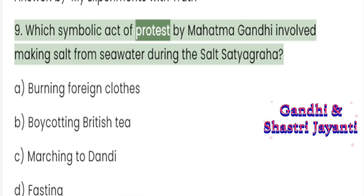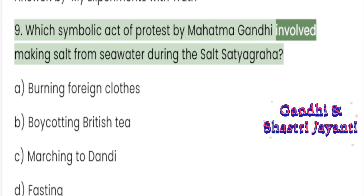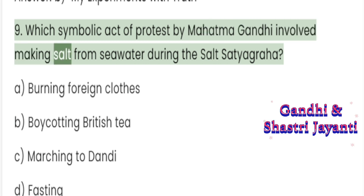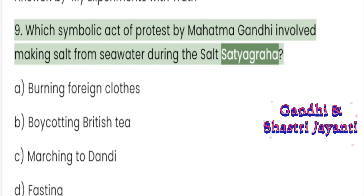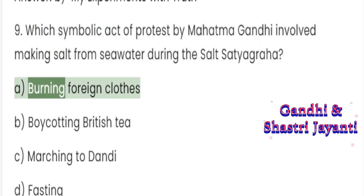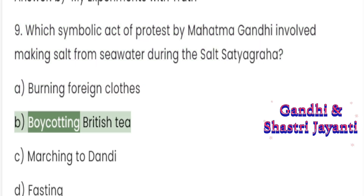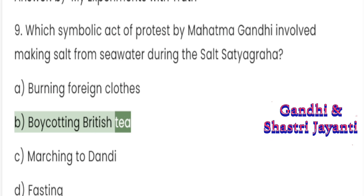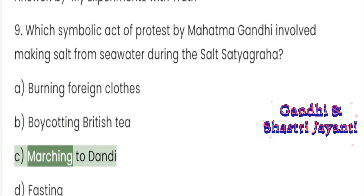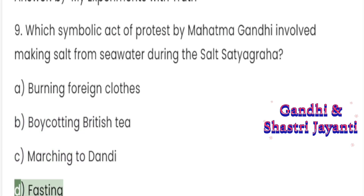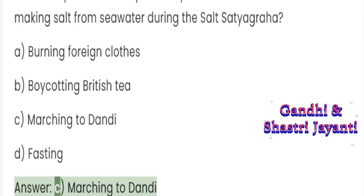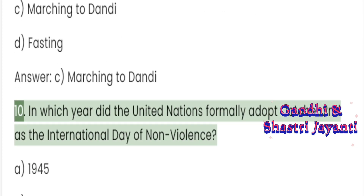Question 9: Which symbolic act of protest by Mahatma Gandhi involved making salt from seawater during the Salt Satyagraha? A. Burning foreign clothes. B. Boycotting British tea. C. Marching to Dandi. D. Fasting. Answer: C. Marching to Dandi.